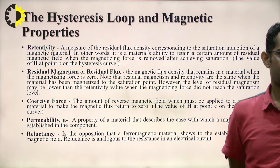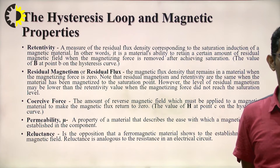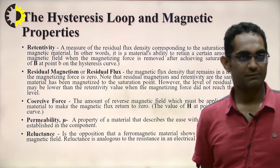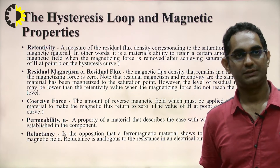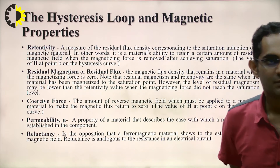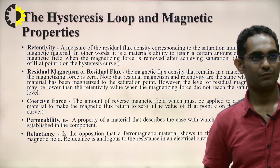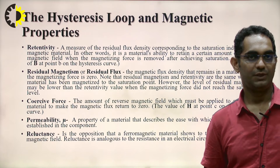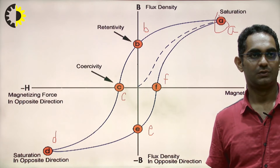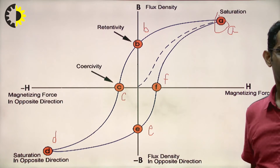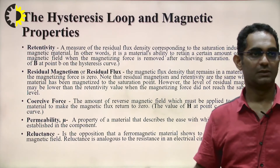In other words, retentivity is a material's ability to retain a certain amount of residual magnetic field when the magnetizing force is removed after achieving saturation. When the magnetizing force is removed after achieving saturation, the value of B at point B on the hysteresis loop is the retentivity.